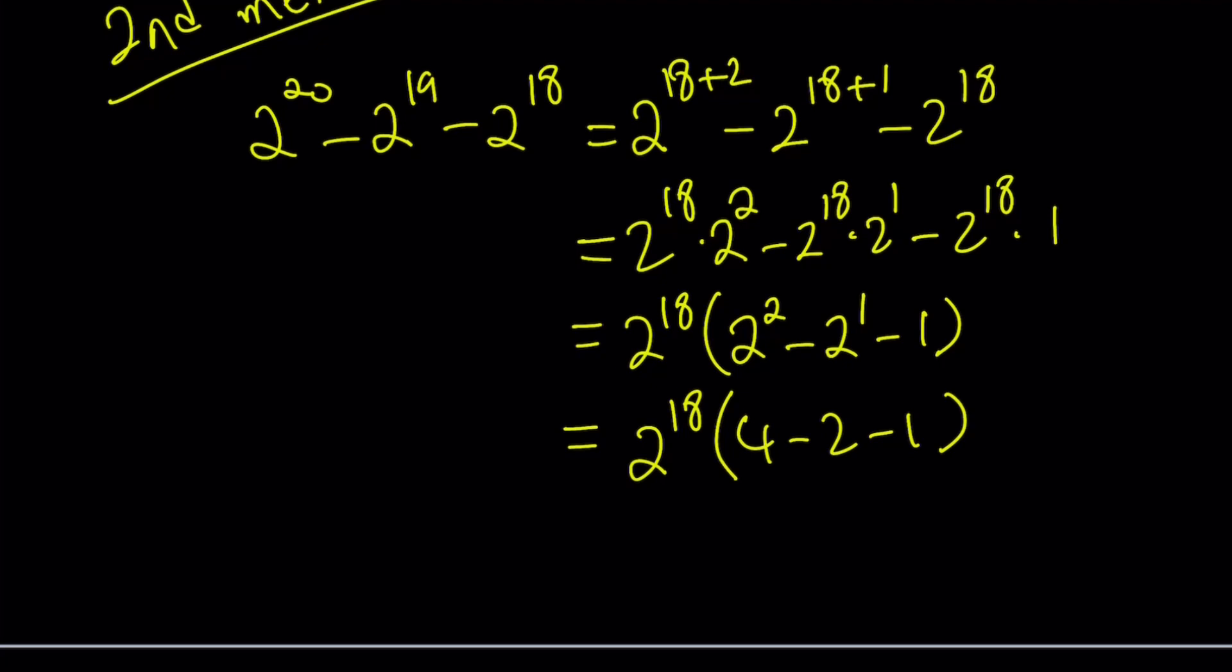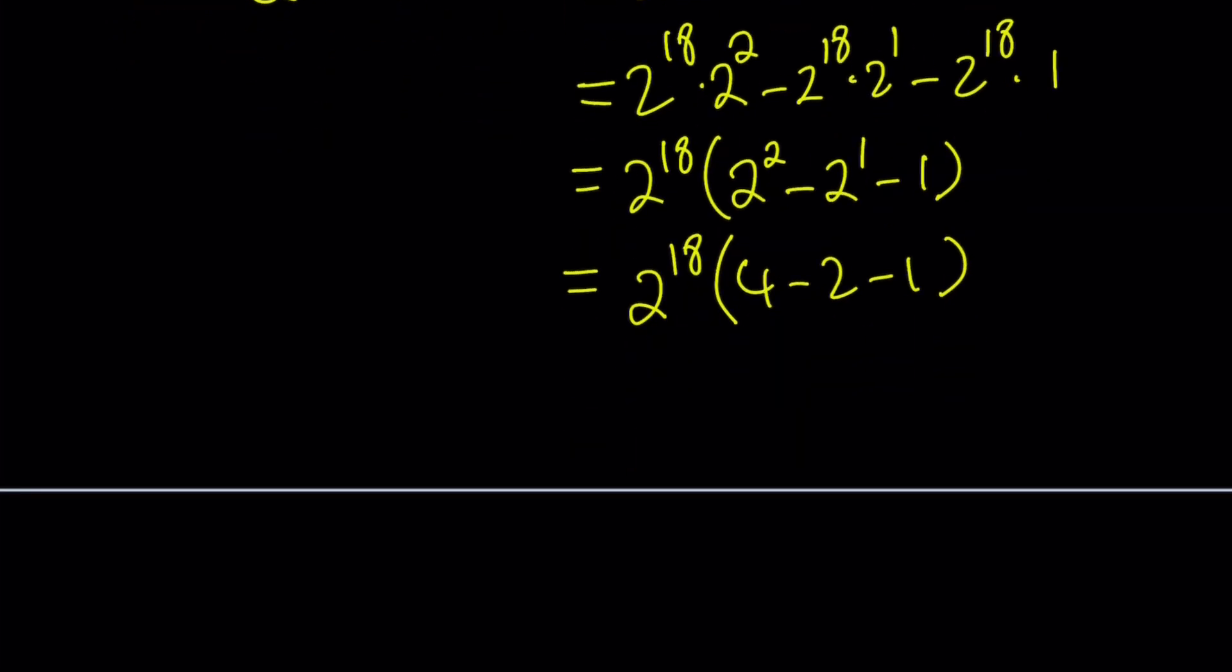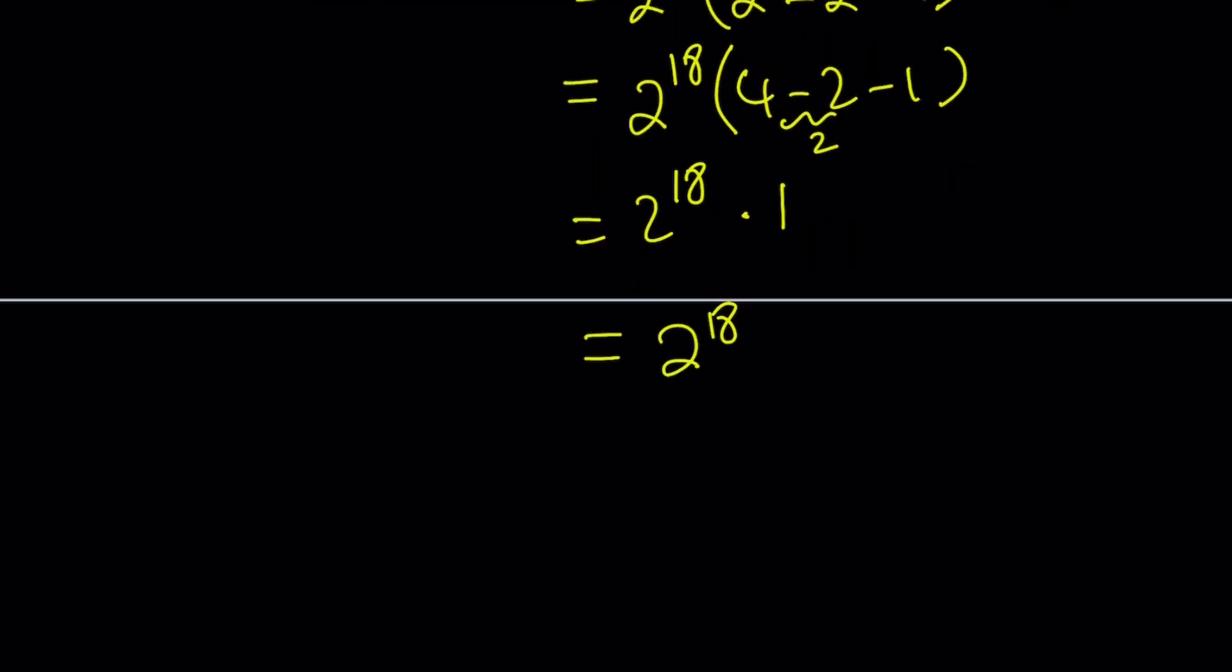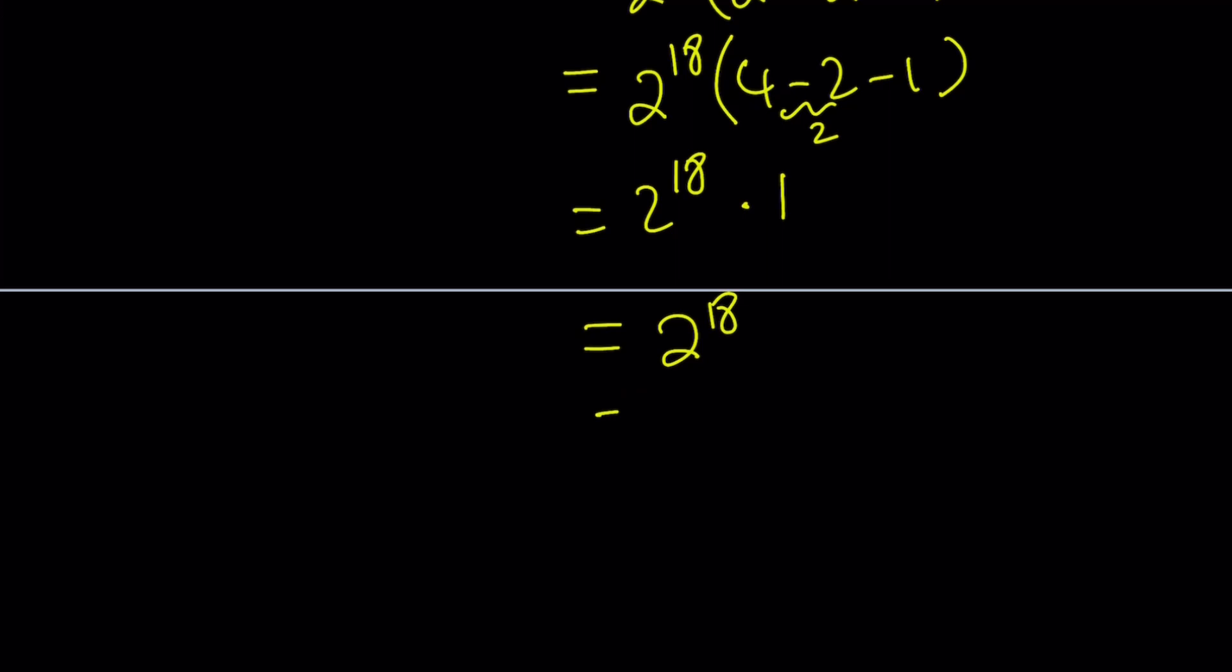Something interesting about powers of 2. We'll talk about it briefly. 4 minus 2 equals 2 and 2 minus 1 equals 1. So this is 2 to the power 18 times 1, which is the same thing as 2 to the power 18. You can leave it at that. Or just like the third method, the one that I've done first, 262,144. Either way is fine. It's going to be the answer. Make sense?